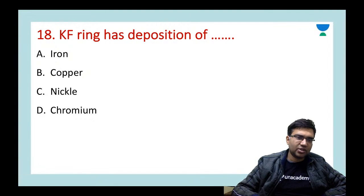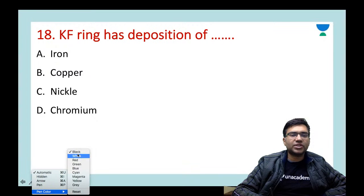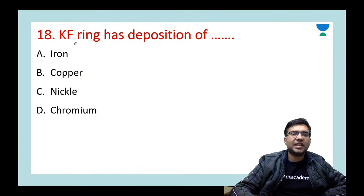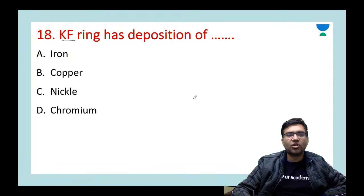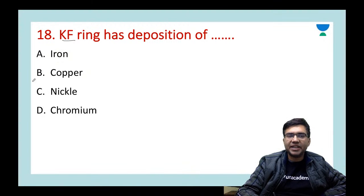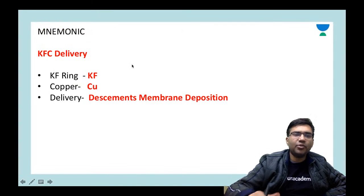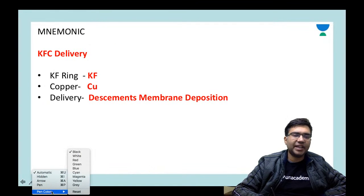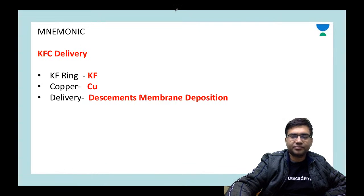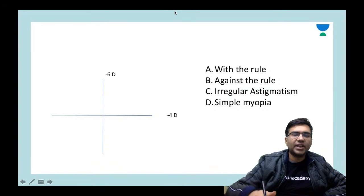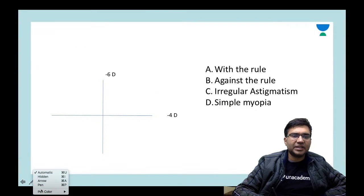KF ring has the deposition of which of the following? As I mentioned, remember 'KFC Delivery': KF ring has deposition of copper in Descemet's membrane.